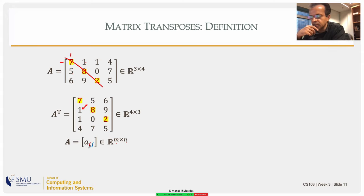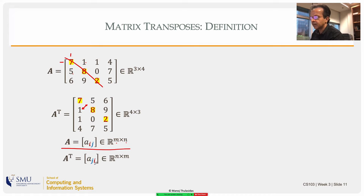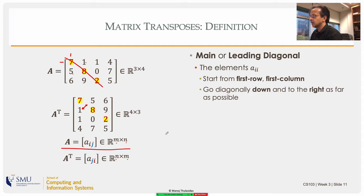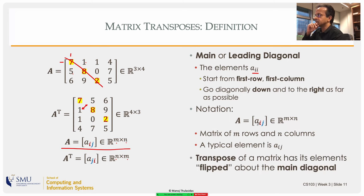This notation may cause some potential confusion with a one-by-one matrix, but from context you should infer it's an m×n matrix. If you allow that notation, then A transpose is the same notation but with column index and row index swapped, and it becomes an n×m matrix. The main diagonal is the collection of elements of type a_ii. Transpose of a matrix is a reflection or flipping of elements about the main diagonal.